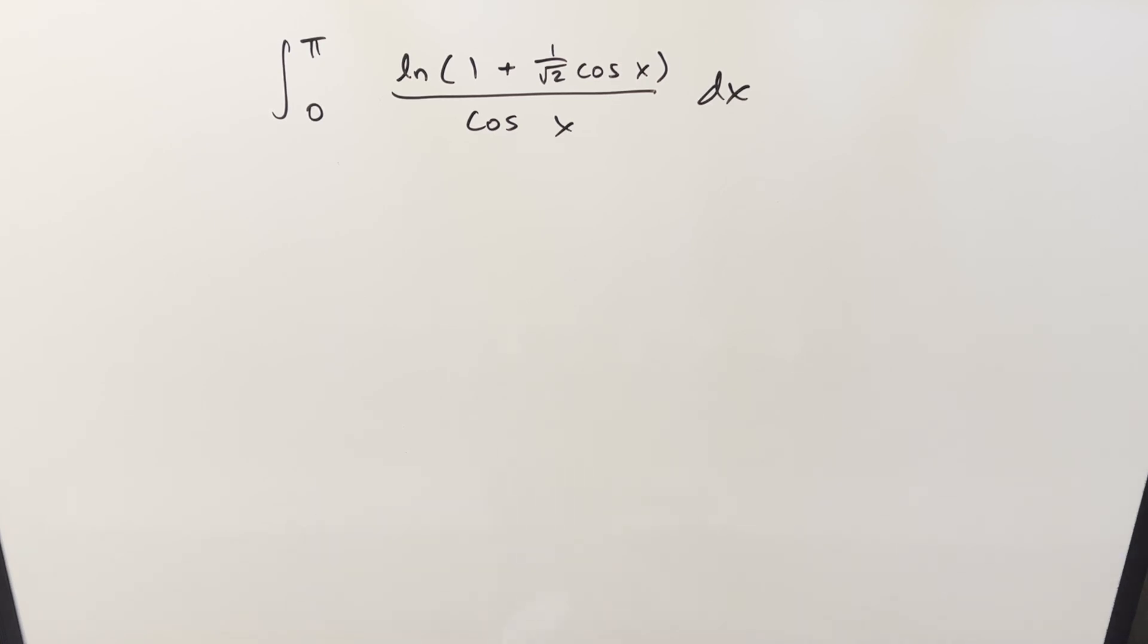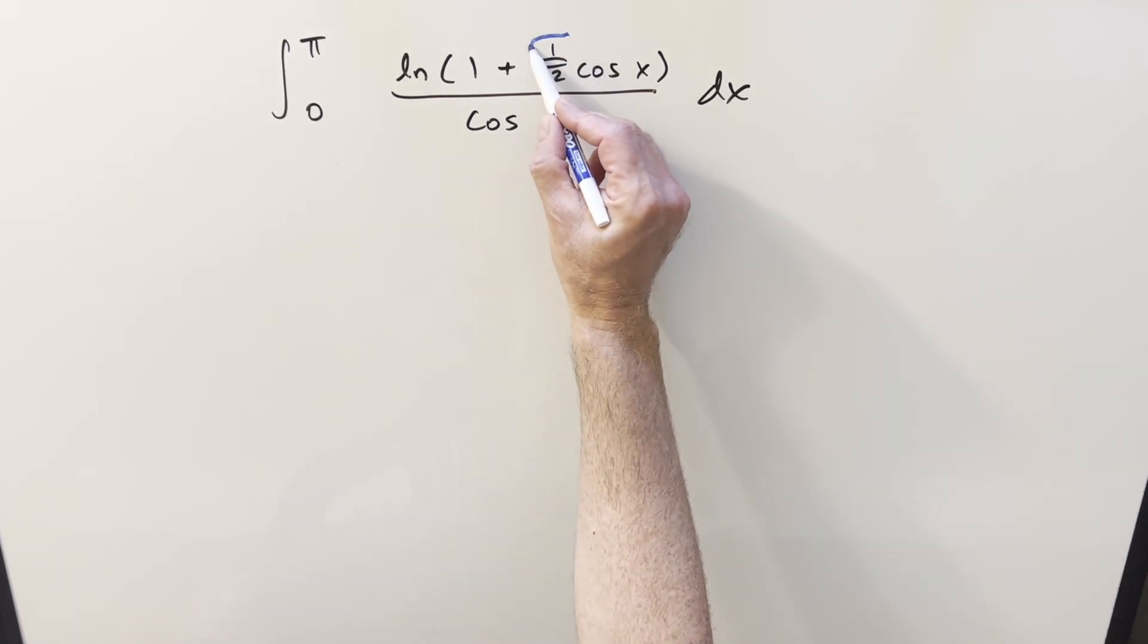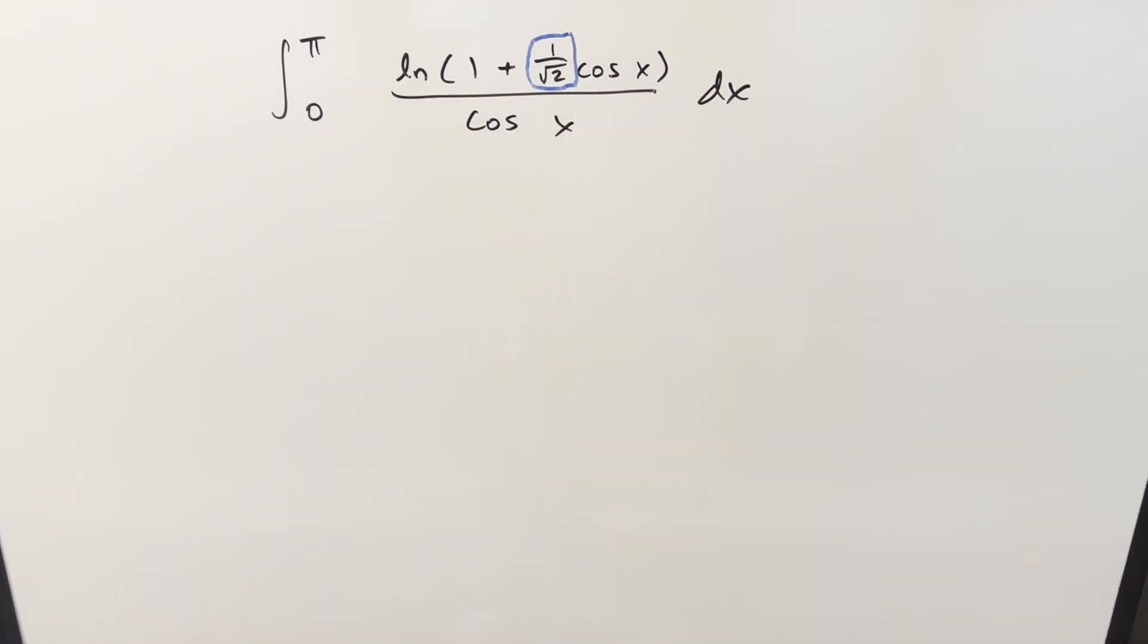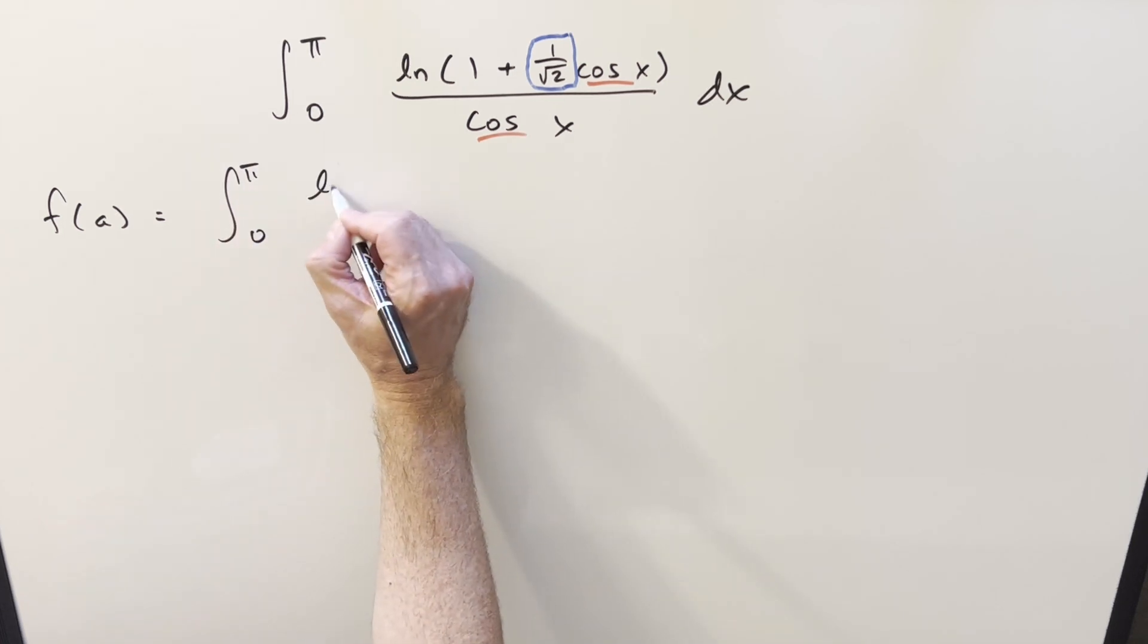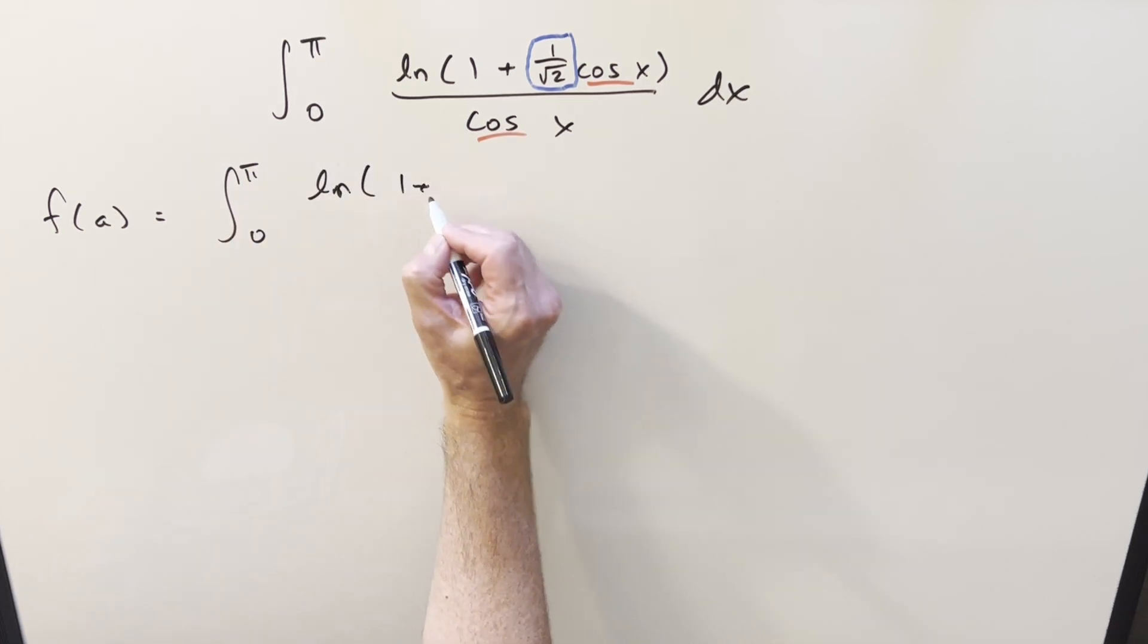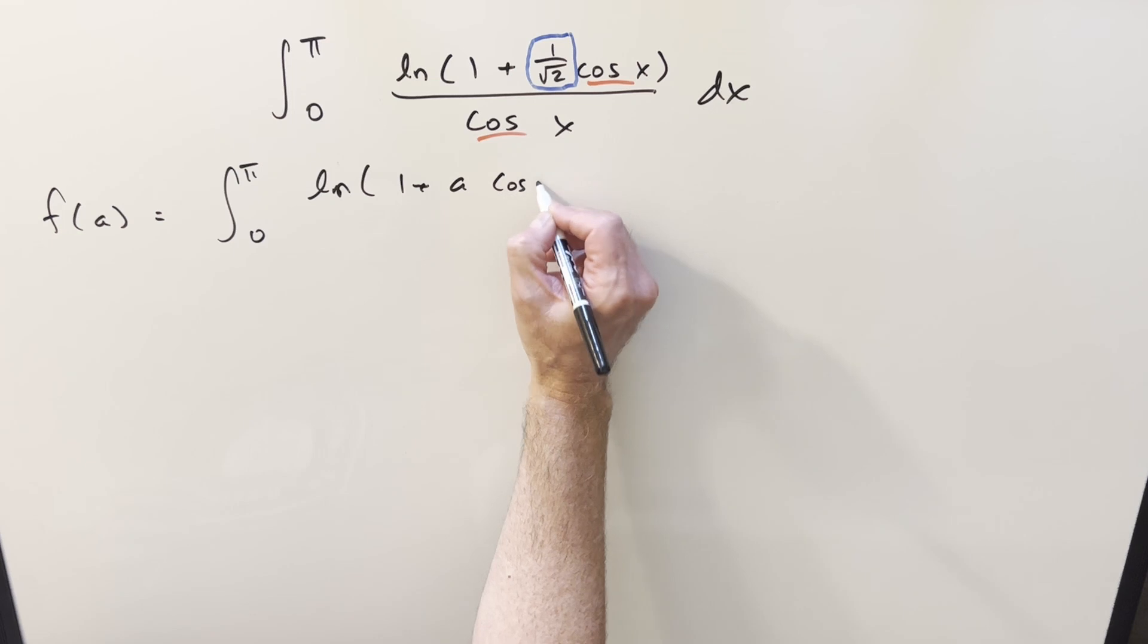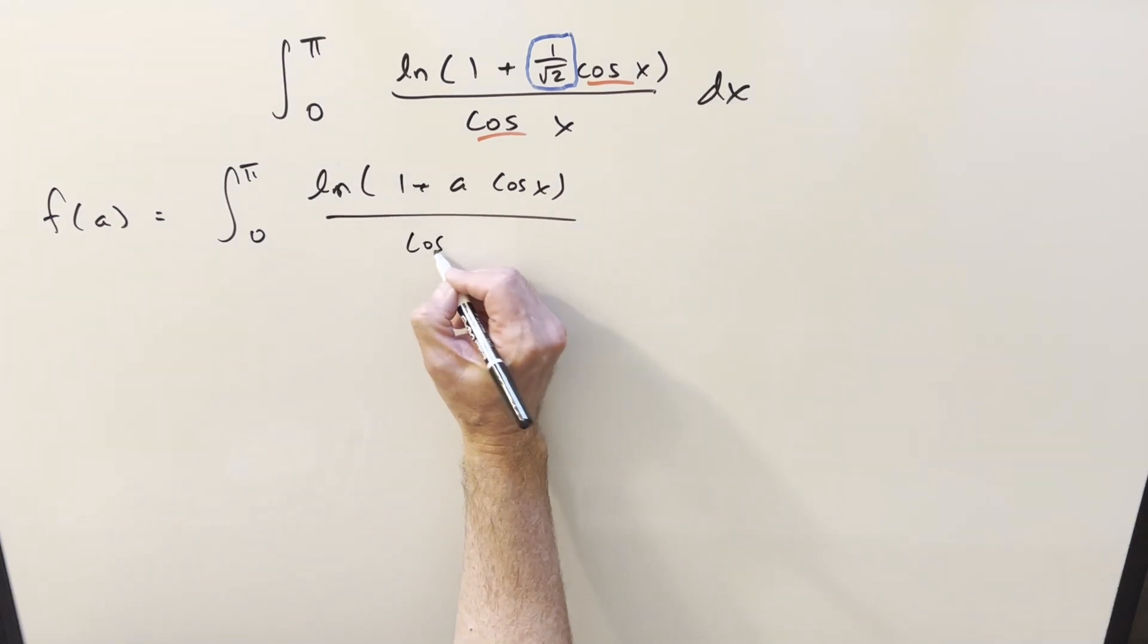To get started with it, what I want to do is use Feynman's trick on it, just parameterizing this part right here. The reason is because we've got cosine here and here, I'm thinking when we differentiate it, we can actually eliminate this cosine in the denominator. So when I do this, let's parameterize it with some variable a, and I'll write out our integral zero to pi, but now the numerator, I'm going to write this as one plus a cosine x cosine x dx.